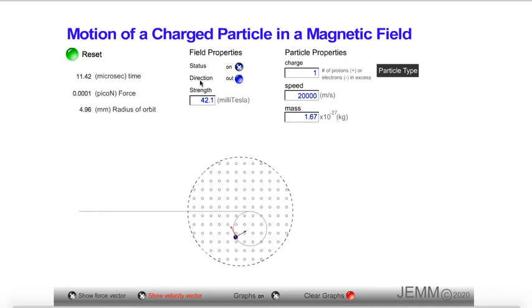Now, you're going to notice this radius here. It says 4.96 millimeters. And so the real question is, what formulas have I put in this simulation to generate this motion?